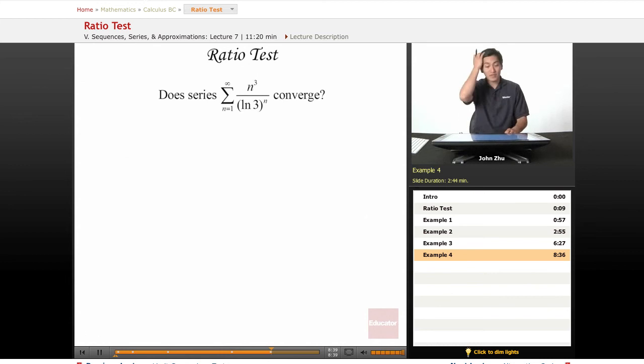Another example here, a final example of the section. We're looking at the series n cubed over natural log of 3 to the n. So right away, let's not be confused by this natural log of 3. It's simply a constant. So let's just treat this like any other constant.